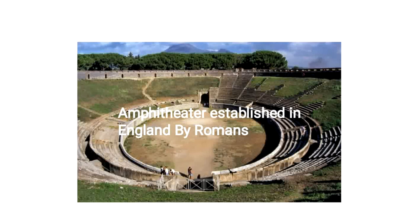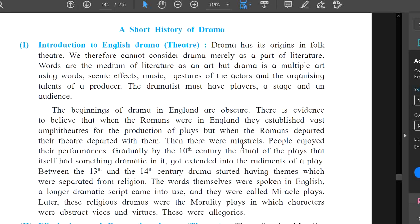Drama was started in England by the Roman people. The amphitheater — meaning open theater — was established for the production of plays. When the Romans moved out of England, there were minstrels whose musical performances people enjoyed for entertainment. Gradually, by the 10th century, the ritual of the play, which itself had something dramatic in it, got extended into the rudiment of a play.